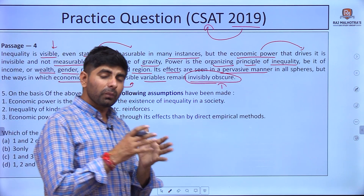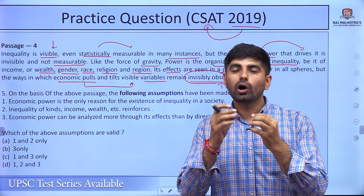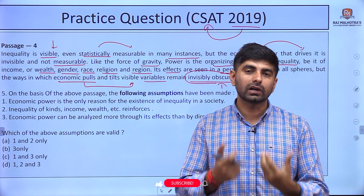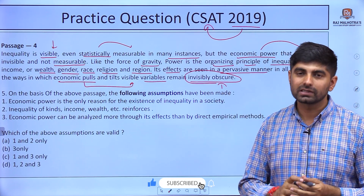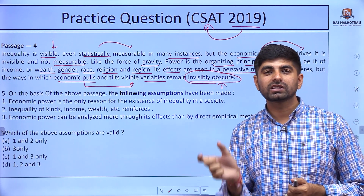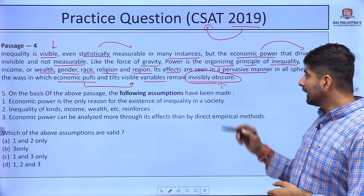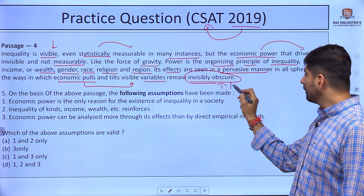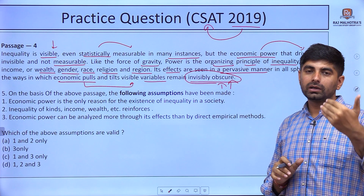But the ways in which economic pulls and tilts make visible variables remain invisibly obscure — meaning those things are not clear. So what we have got from the passage is that the economic power which drives inequality is not measurable, it is invisible, and the ways in which it happens are also obscure.